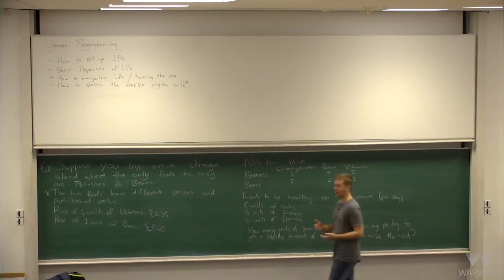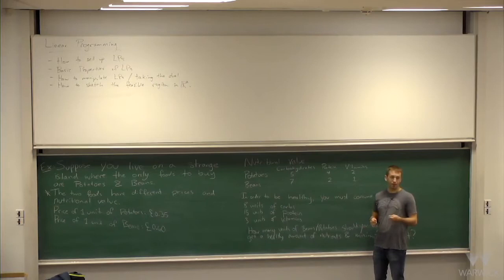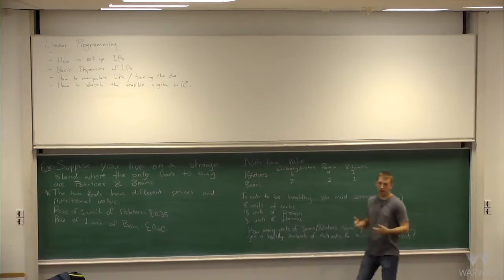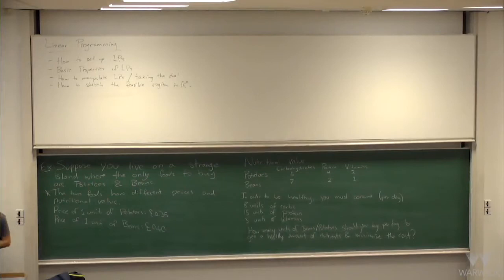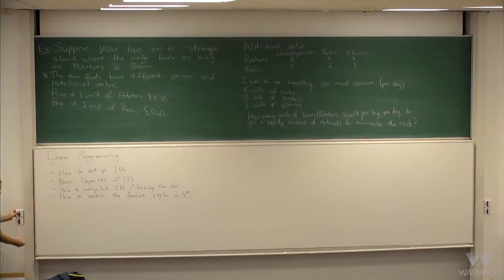Being students, you can understand not having a lot of money. You want to get enough nutrition but spend the least amount of money possible. You need 8 of carbs, 15 of protein, 3 of vitamins — these things cost different amounts and you want to minimize the amount you spend per day. So we want to find out how much potatoes and how much beans you should buy.